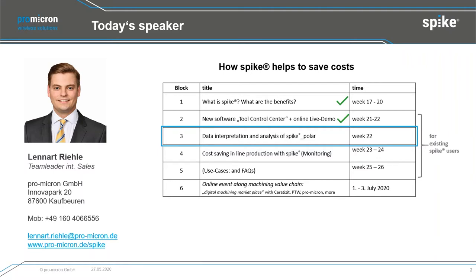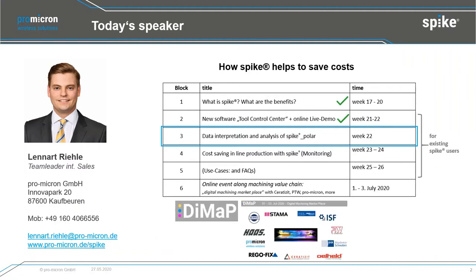The next block — block four — will cover how to get the cost-saving benefit in production by using Spike as a monitoring tool. This is the bigger project: before you can do that, you need to understand how to read the data. The fifth block will show you user cases and answer your key questions. I'd also like to introduce block three in a little more detail.